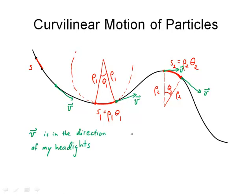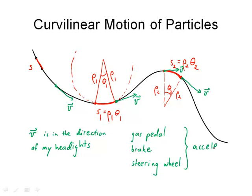I can speed up — that's my gas pedal — that will change my velocity. I can slow down using my brake. Or I can turn, neither speeding up nor slowing down — for that I use the steering wheel. So these three devices within my car are all accelerators. When you think of the accelerator in a car you generally think of the gas pedal, but in fact the gas pedal, the brake, and the steering wheel all cause acceleration.